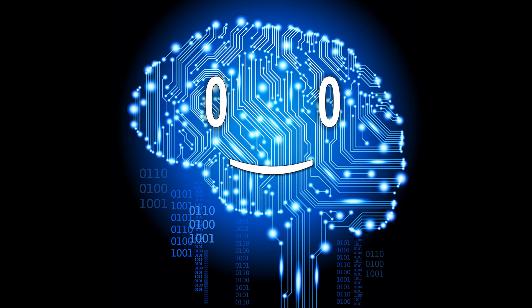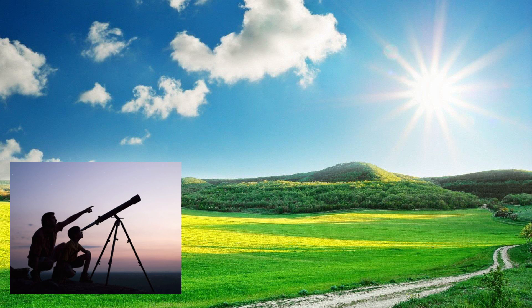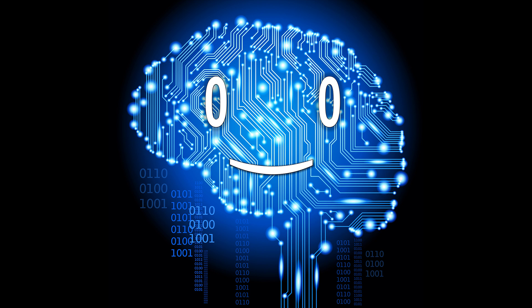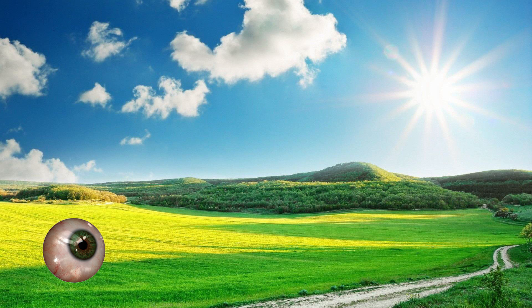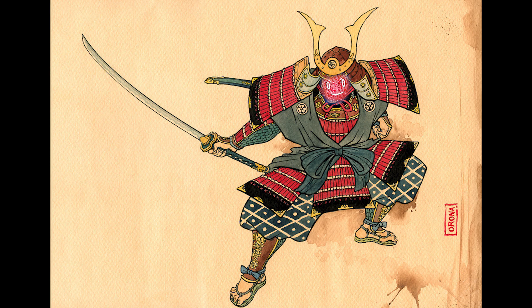Hello mortals. During a sunny day, take a telescope and look at the Sun. Okay, it was a bad idea. Simply look at it with the naked eye. What color is it? Yellow? Orange? Maybe even red, if you live in the samurai land.